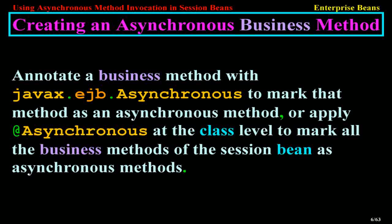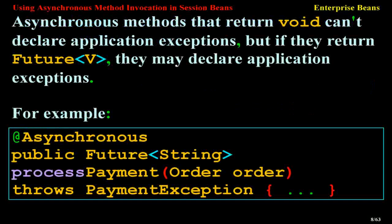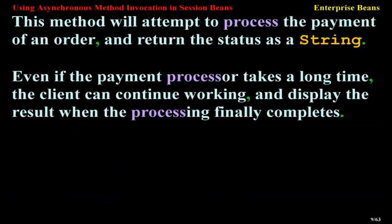Asynchronous methods must return either void or an implementation of the Future<V> interface. Asynchronous methods that return void can declare application exceptions, but if they return Future<V>, they may also declare application exceptions. For example: @Asynchronous public Future<String> processPayment(Order order) throws PaymentException. This method will attempt to process the payment of an order and return the status as a string. Even if the payment processor takes a long time, the client can continue working and display the result when processing finally completes.